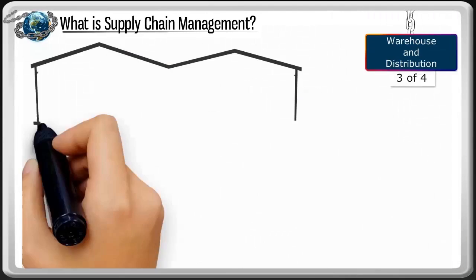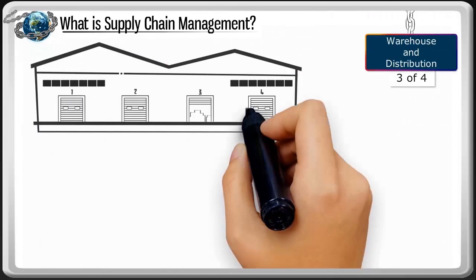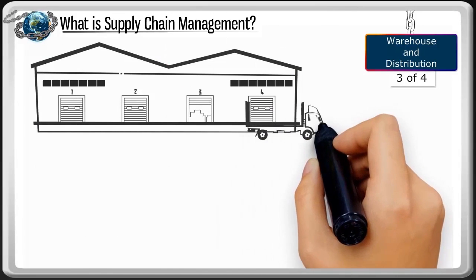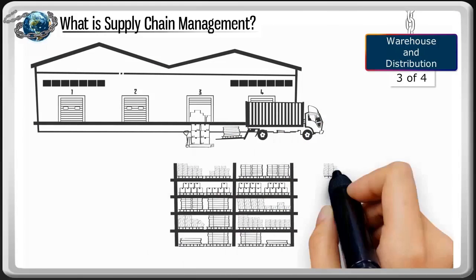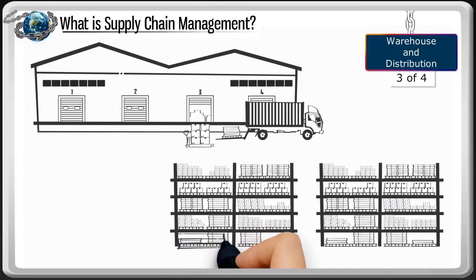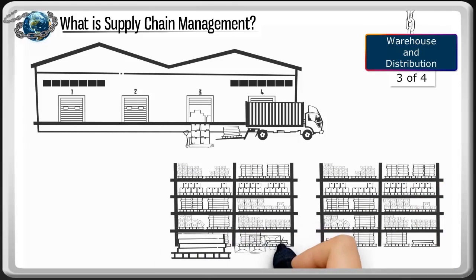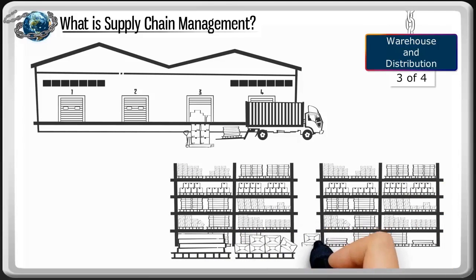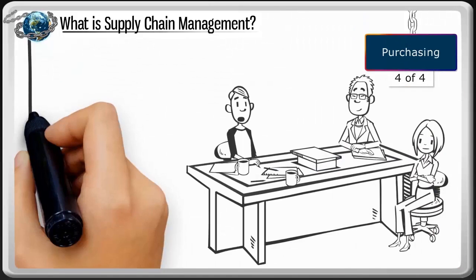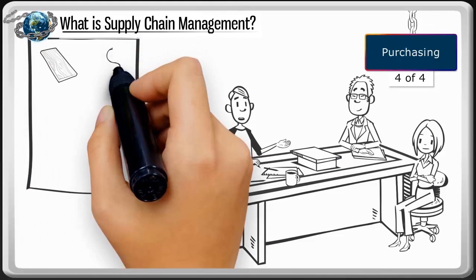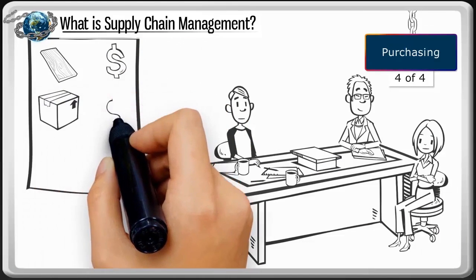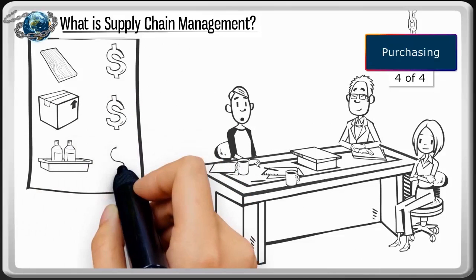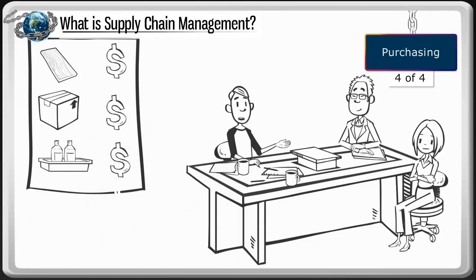Warehouse and distribution includes the sites and locations where everything that flows through the supply chain is stored. We refer to all stored items as inventory. Purchasing is the process of buying everything needed at the best price and quality to produce a final product that meets the customer's requirements.